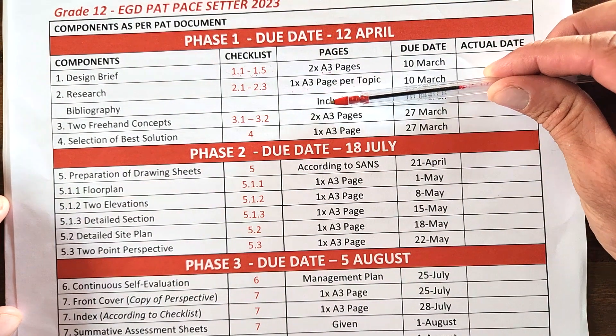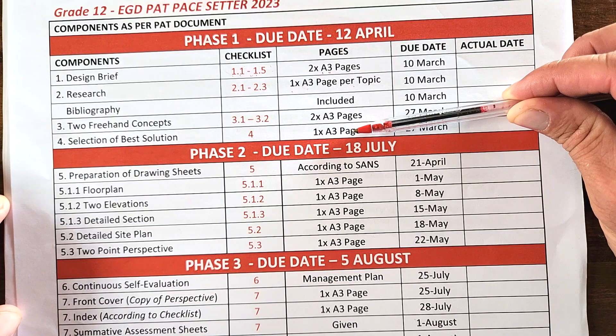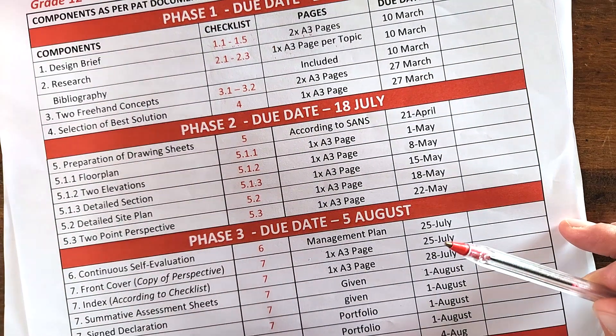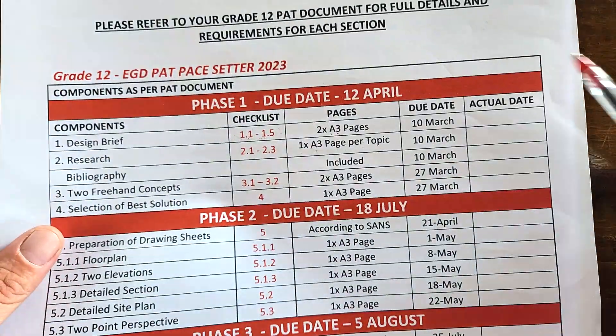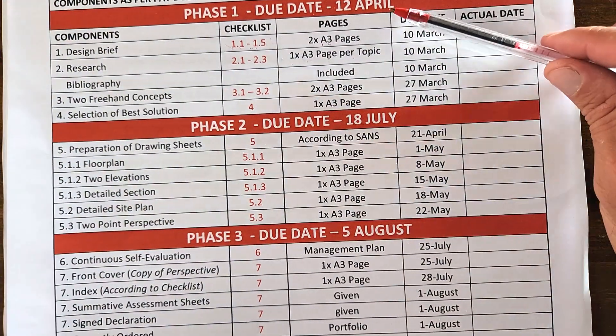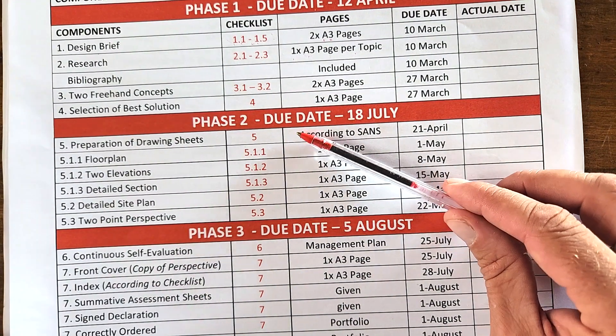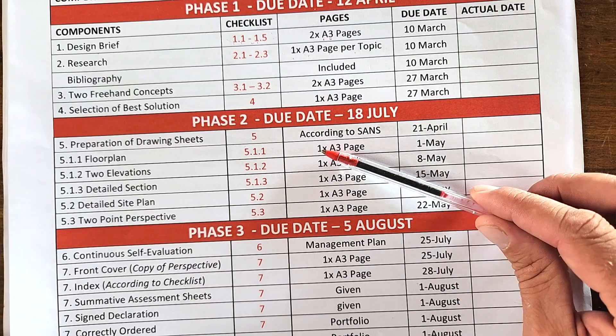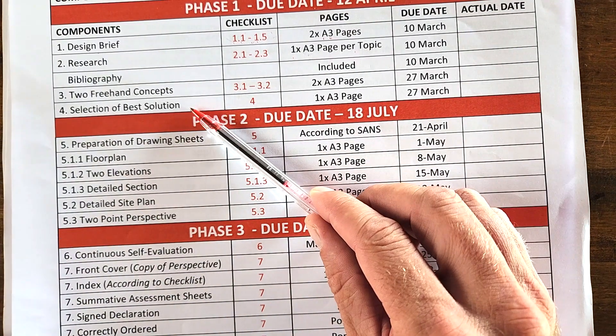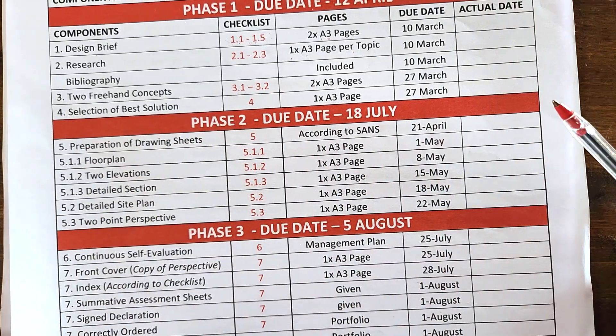Leading up to today, I've spoken through the design brief with you. We've looked at the research, done the two freehand concepts, and now we're going to look at how to select your best freehand solution. I've set up this space center that you can download in the description below. Today we're zooming in on selecting your best solution after completing your freehand concepts.